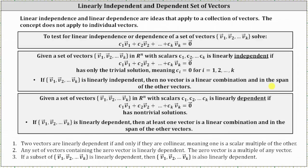However, if the vector equation has non-trivial solutions, meaning solutions where c sub 1 through c sub k are not all zero, then the set of vectors v sub 1 through v sub k is linearly dependent. This also means at least one of the vectors is a linear combination and in the span of the other vectors.